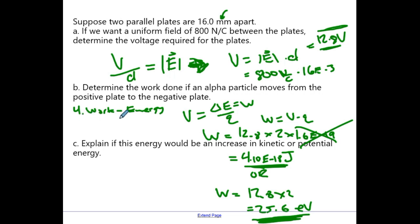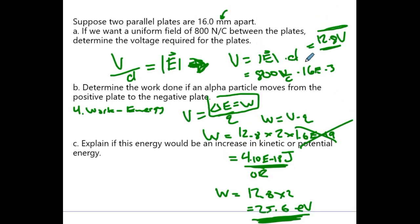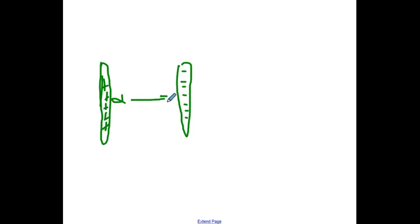The big picture principle we used was the work-energy theorem, because that's what allowed us to change your energy out for work. Let me draw a diagram: positive plate on one side, negative plate on the other. The alpha particle — which is basically two protons — is going to move from the positive to the negative plate. Protons would naturally want to move that way, so the work done is going to take potential energy and convert it into kinetic energy.